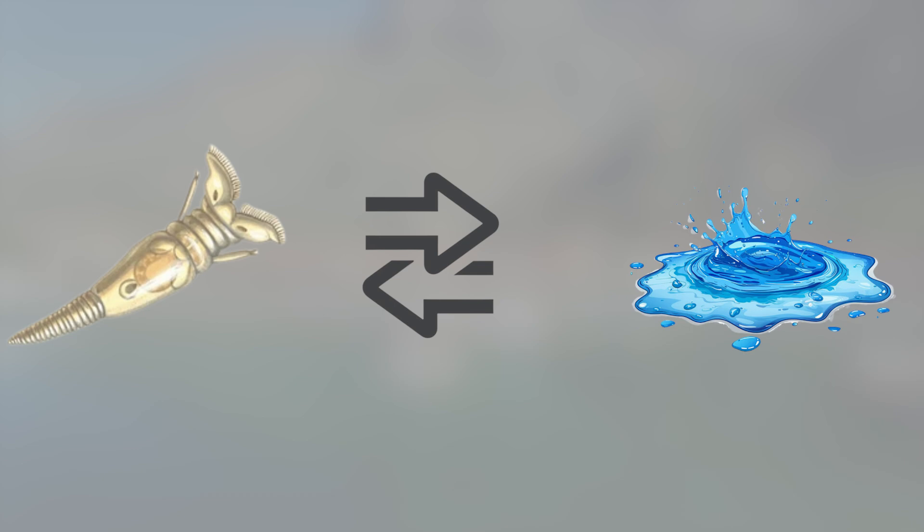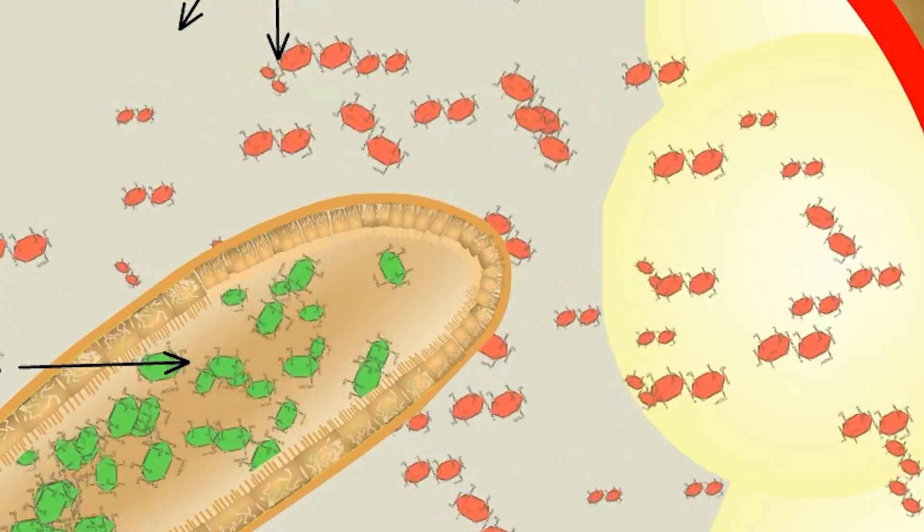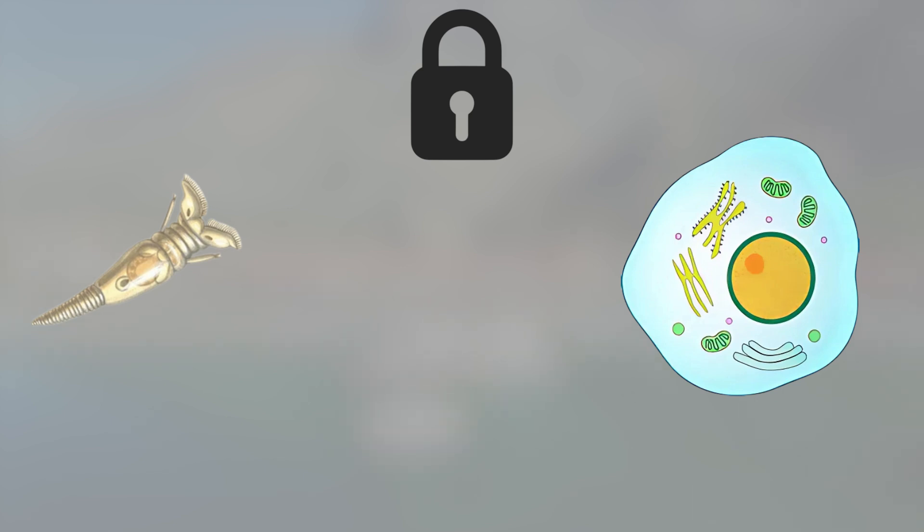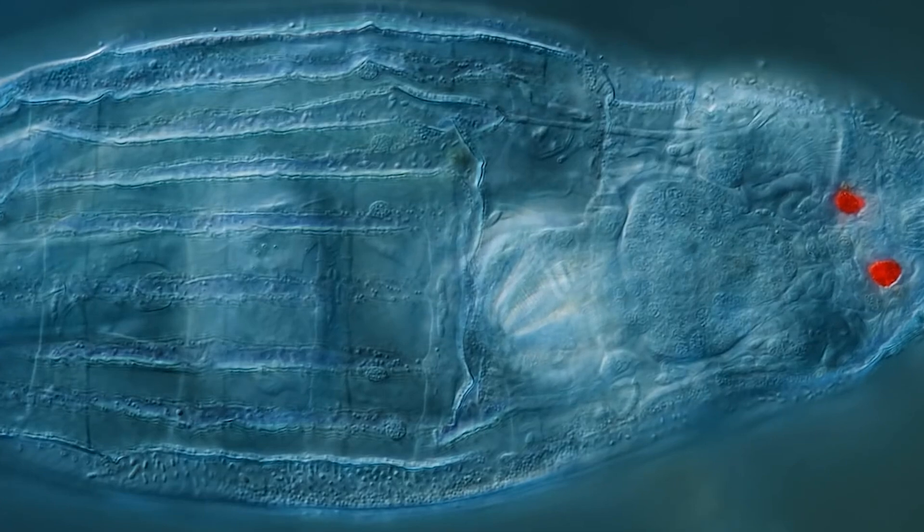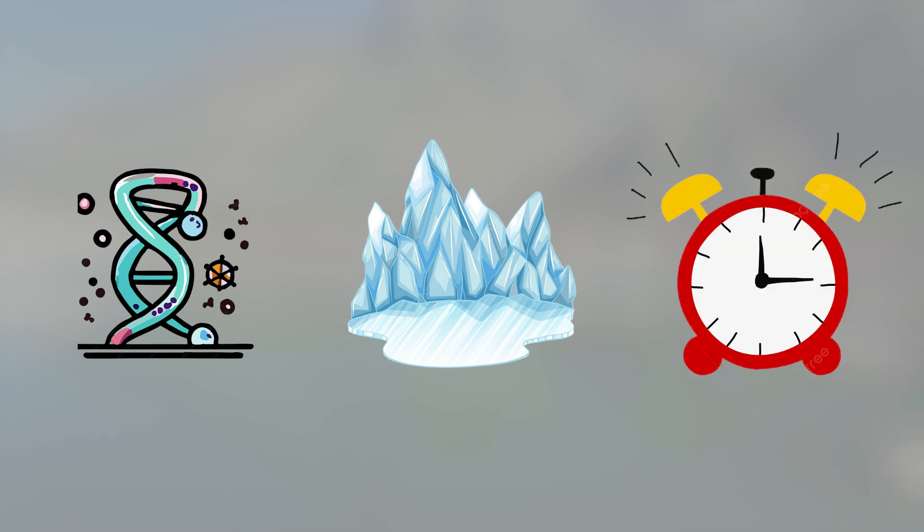It begins replacing the water in its cells with protective sugars, especially trehalose. These sugars act like organic antifreeze—they block ice formation, stabilize proteins, and lock cellular structures in place without allowing them to collapse. Its DNA coils tighter, its membranes seal shut, its body transforms into a glass-like structure, biologically frozen in time.